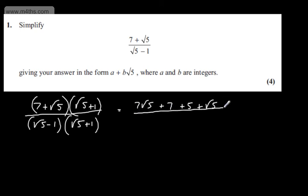If we now consider the denominator, we're going to have root 5 times root 5, which is 5, plus root 5, then minus root 5, and then minus 1.